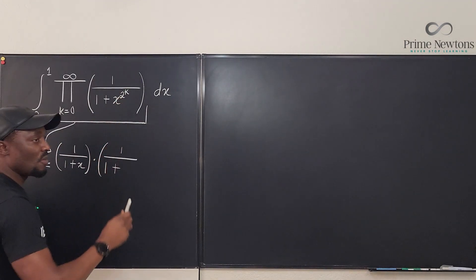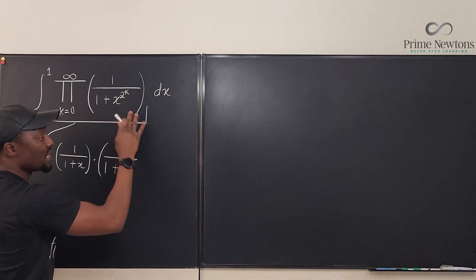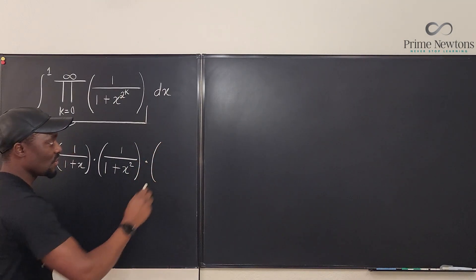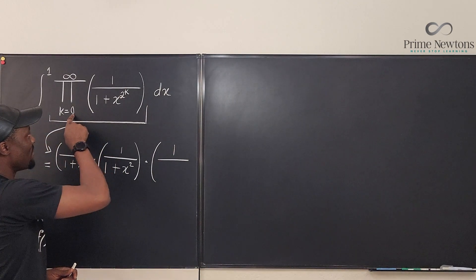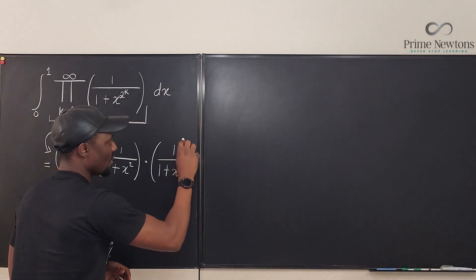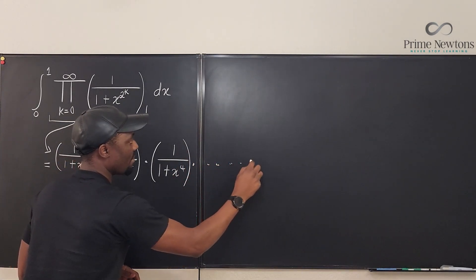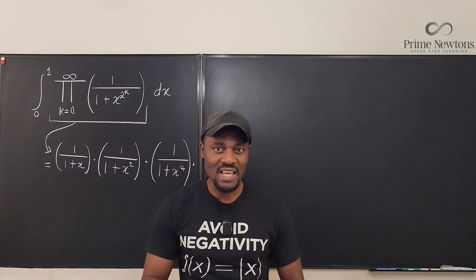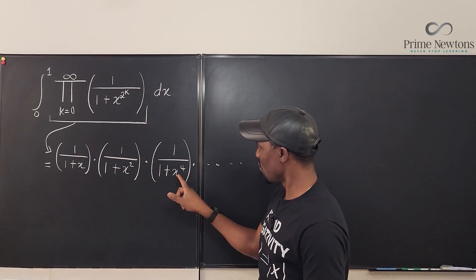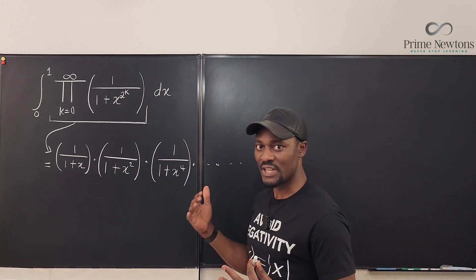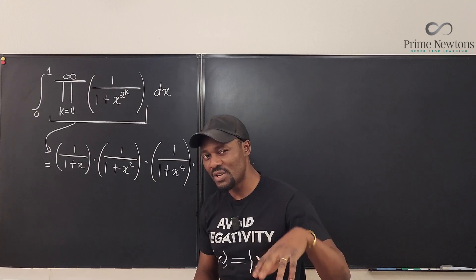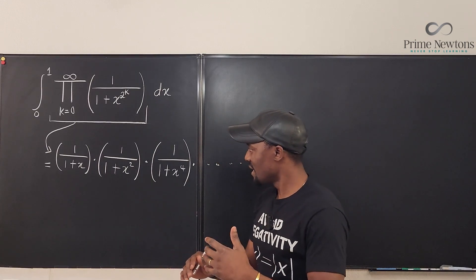When k=1, 2 to the power 1 is 2, so the next term is 1 over (1 + x squared). The next term after that: when k=2, it's 2 squared = 4, so it's 1 over (1 + x to the fourth). You can already see it — as k goes from 0 to 1 to 2, the exponents are the even powers of x, and it just continues to infinity.